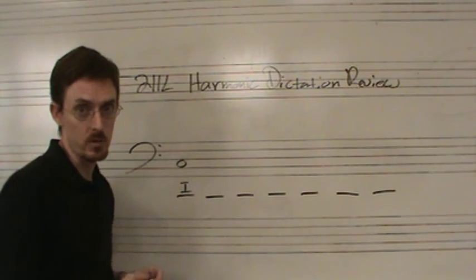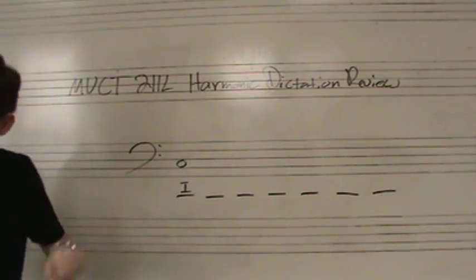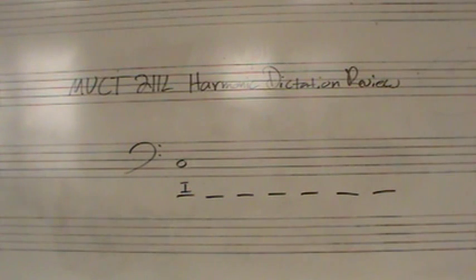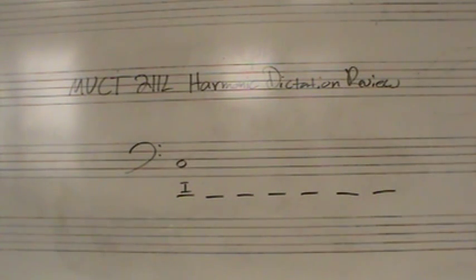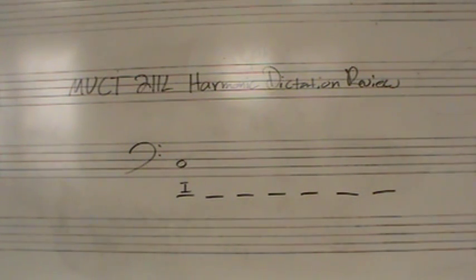Let's start with this one. Put all this information down — seven chords, do in the bass, one chord. Here's what it'll sound like. [First C major dictation played twice — count-in: one, two, three, four.]